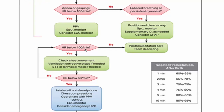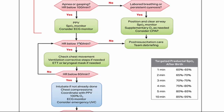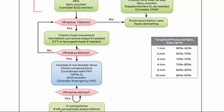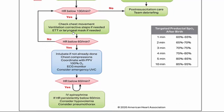Heart rate is the key pivot point at 100 beats per minute. If not below 100 and everything else is managed, continue monitoring post-resuscitation. If yes, check chest movement and ventilation, apply corrective steps if needed, and consider endotracheal tube or laryngeal mask. If heart rate is below 60, intubate if not already done, begin chest compressions coordinated with positive pressure ventilation, administer 100% O2, apply ECG monitoring, and consider emergency umbilical vein catheterization. If still below 60, consider epinephrine, hypoglycemia, and pneumothorax.